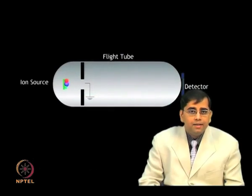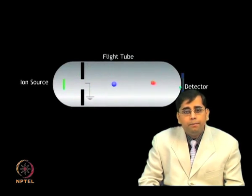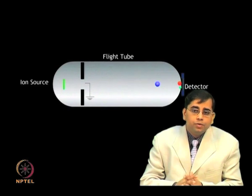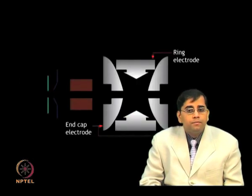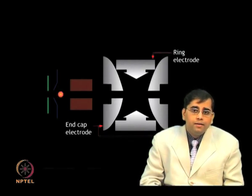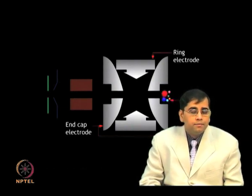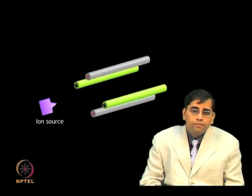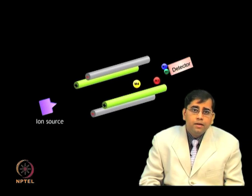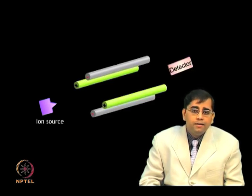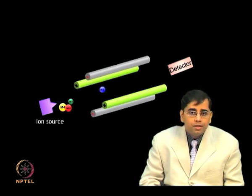The time of flight measures the m/z ratio of ions based on the time it takes for ions to fly in the analyzer and strike the detector. The ion trap traps ions using electrical fields and measures mass by selectively ejecting them to the detector. The quadrupole consists of four parallel metal rods, and mass separation is accomplished by the stable vibratory motion of ions in a high frequency oscillating electric field created by applying direct current and radio frequency potentials to electrodes.